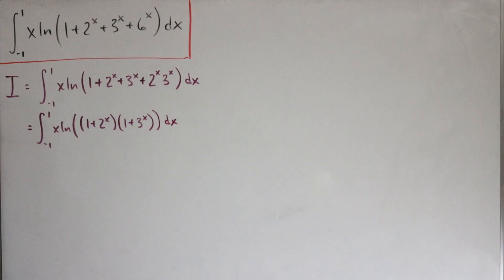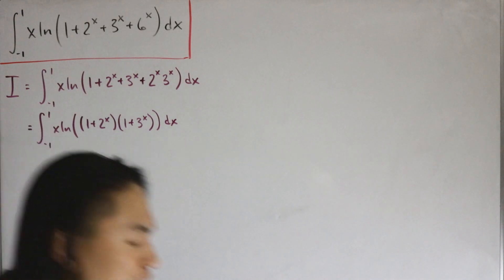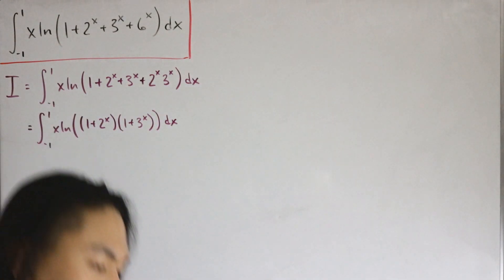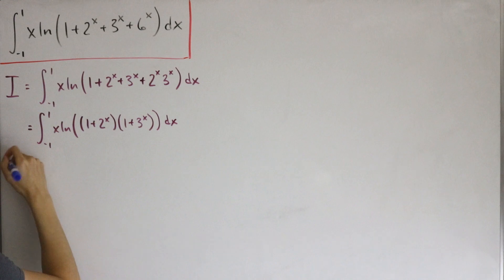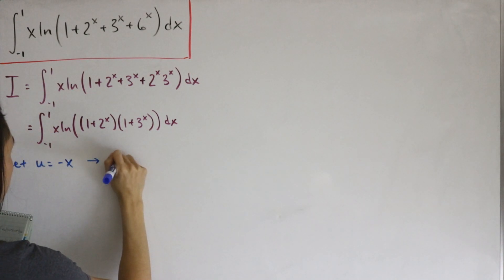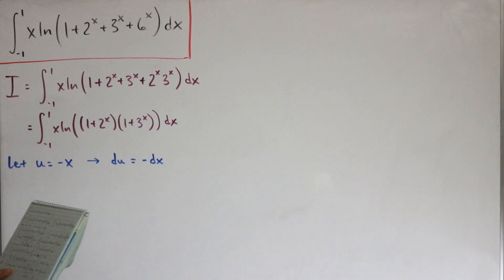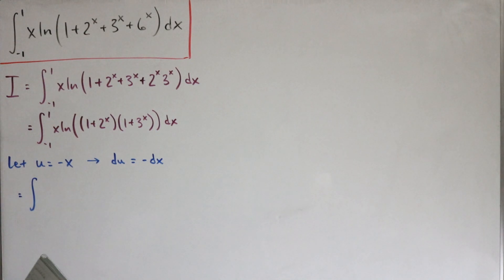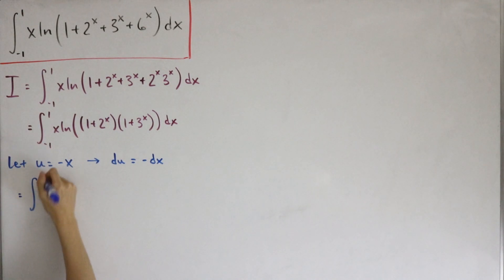Now we perform a u-substitution. We let u = -x, so du = -dx. Don't forget we also have to change the bounds. When x = 1, u = -1, and when x = -1, u = 1, so the bounds flip to go from -1 to +1 again but with the sign change accounted for.